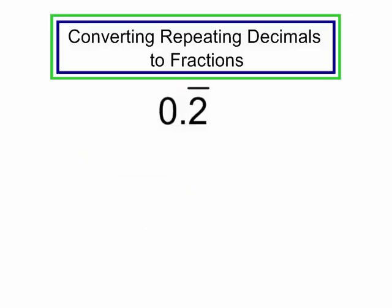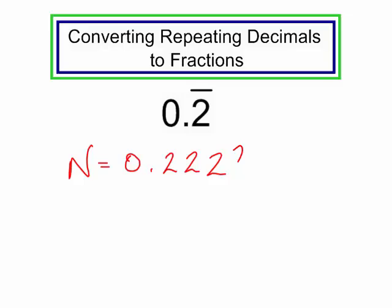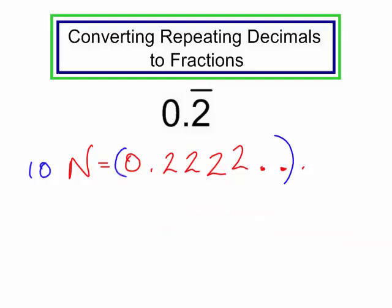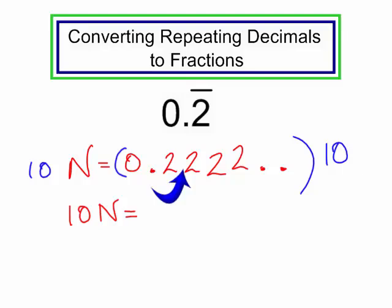Let's try another one. We have a repeating decimal, 0.2 repeating. I'm going to let n equal this number, so n is going to equal 0.222 and on and on. I'm going to multiply by a power of 10. There's only one number repeating, so it would be 10 to the first, which is 10. Multiply the left side and the right side — I will have 10n, and move that decimal point one place to the right.